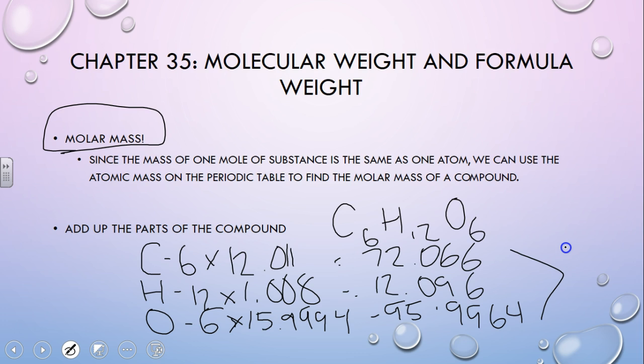Now we take those and we add them up. We get 180.1584, and that's grams per mole. That's how many grams are in one mole.